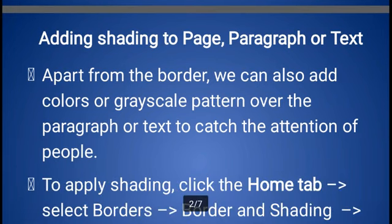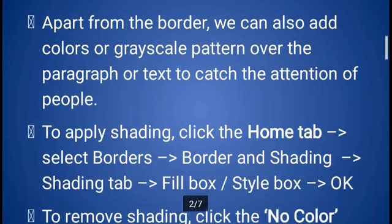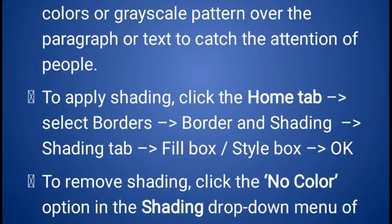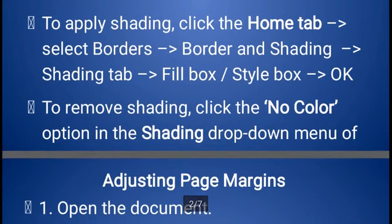Apart from the border, we can also add colors or grayscale patterns over a paragraph or text to catch the attention of people. To apply shading, click the Home tab, then select Borders, and then select Border and Shading. In the Shading tab, you can see the Fill box and Style box. In the Fill box you can set the color; in the Style box you can set the shading percentage. To remove shading, click the No Color option in the shading drop-down menu.